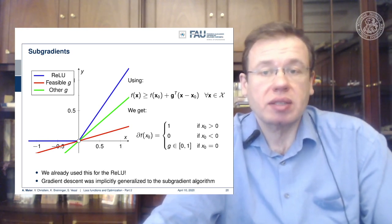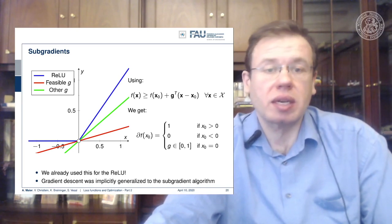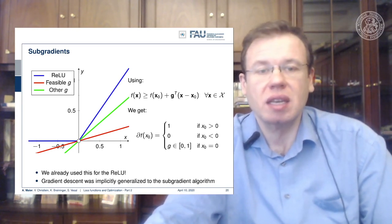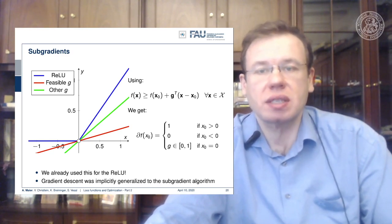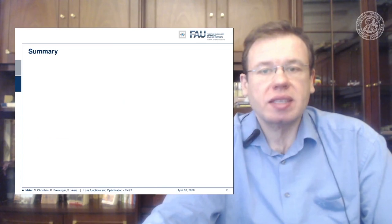So we can now say, well, the functions that we are looking at, they are locally convex, and this then allows us to find the local minima even with ReLUs, even with hinge loss and so on. So let's summarize this a bit.